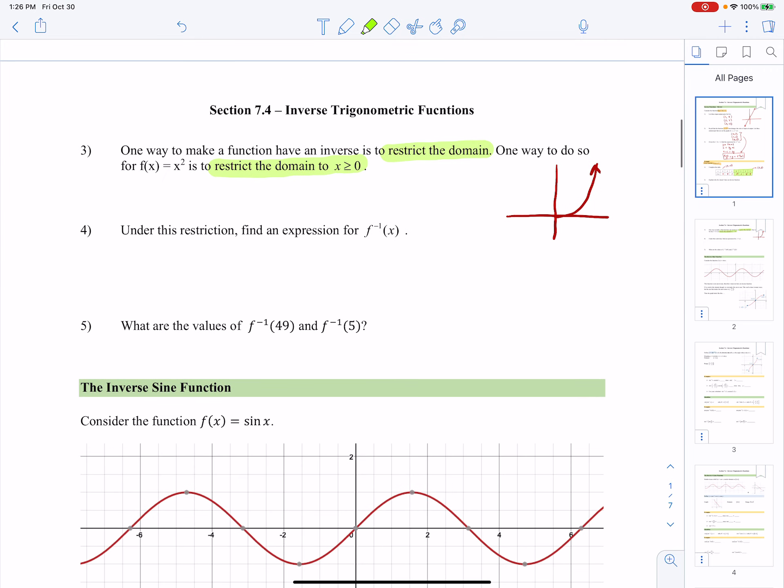Okay, so that's what restricting the domain is all about. So to find the inverse function, well, we know that we're saying y equals x squared, which means x equals y squared when I interchange x and y. And if I solve for y, I get y equals the square root of x, which is the inverse function of x.